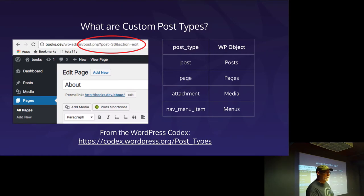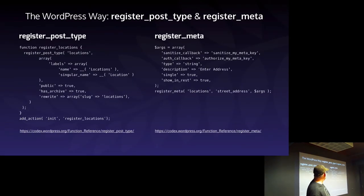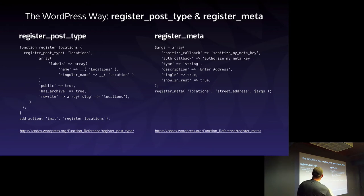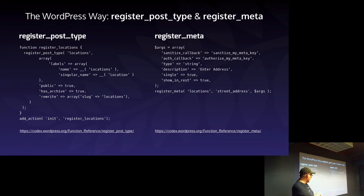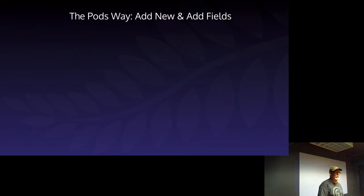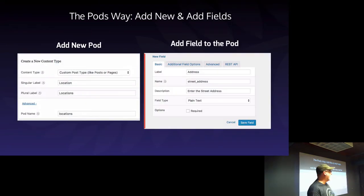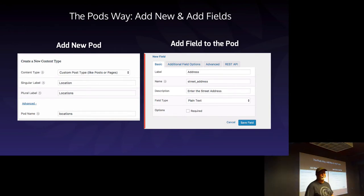I'm going to show you the way you can register post types for WordPress. This is the traditional code approach — you can see 'locations', 'location', the slug 'locations', and further down in the meta, 'street address'. It's a complicated way to do it, with links at the bottom. The PODs way is simpler: we just call 'add_pod locations' and then 'add a field to the pod, street address'. Fairly simple.